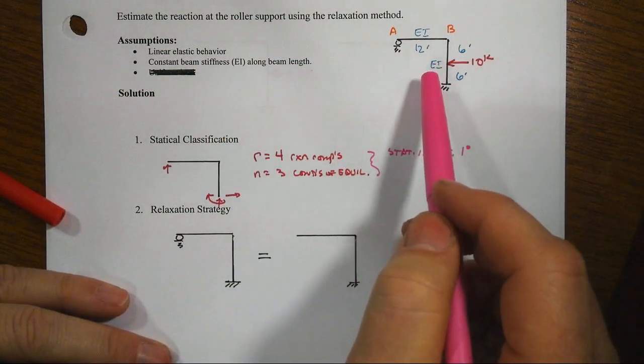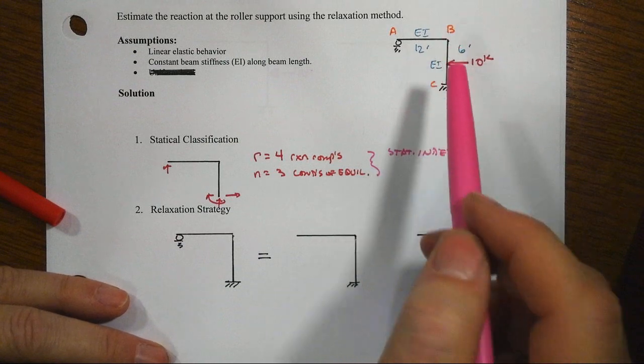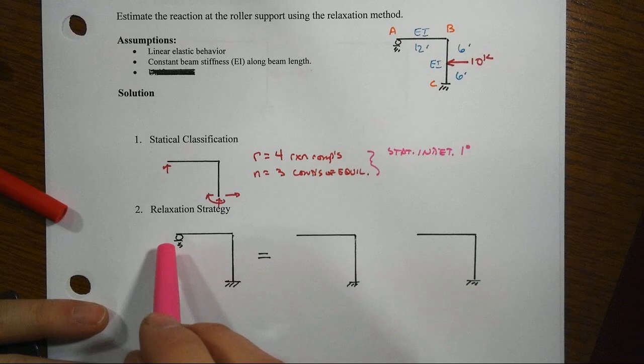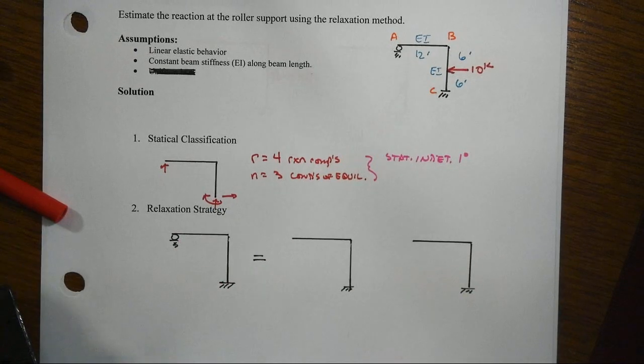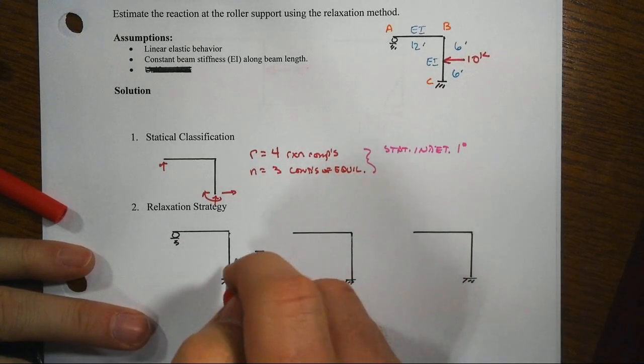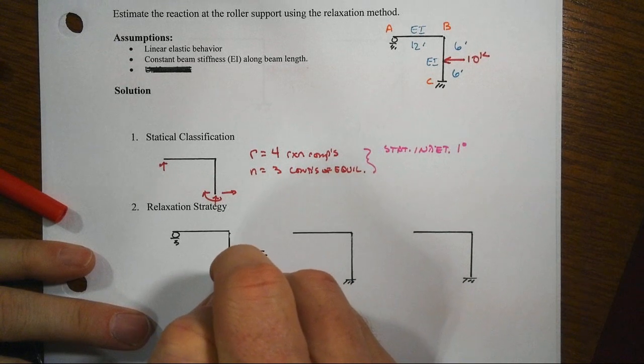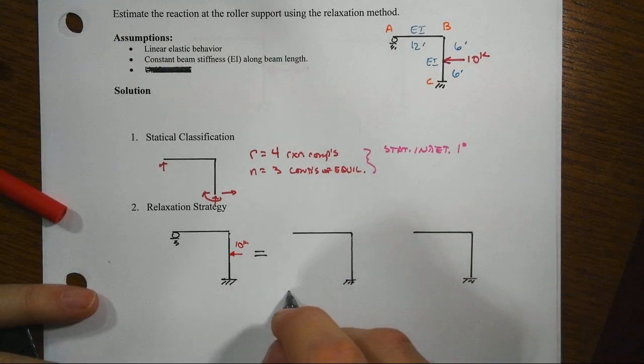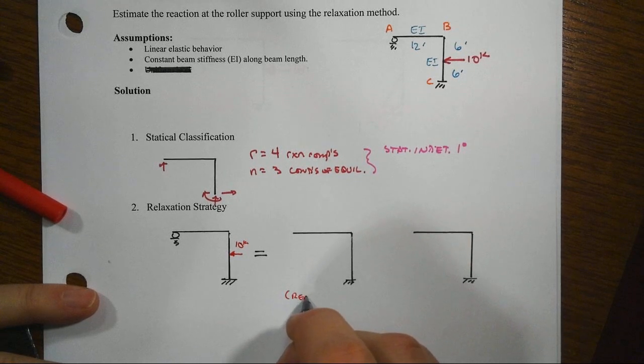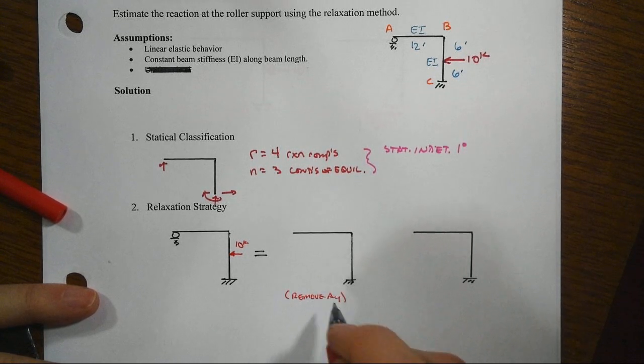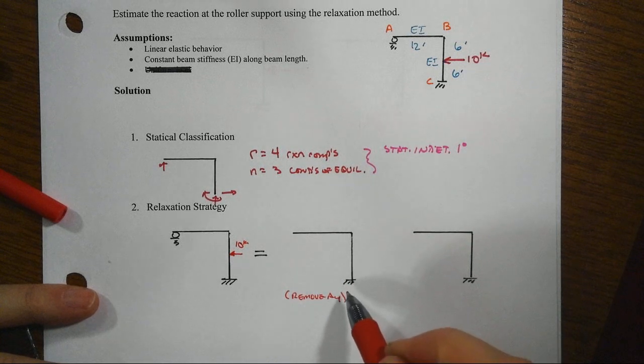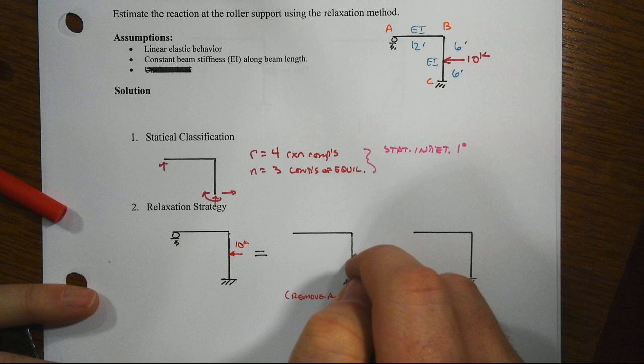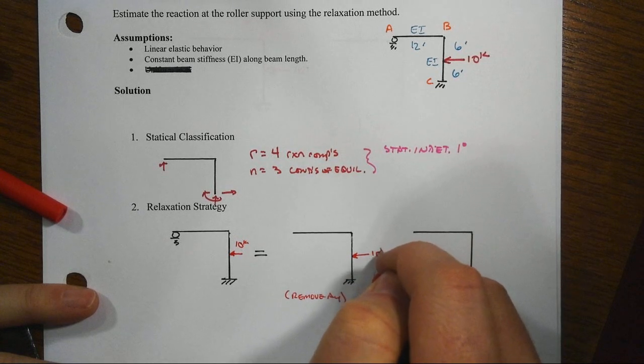It's going to enable us eventually to find all the reactions and then come back and find out what this sway is at B. What we're going to do is take this real system that has this load applied at the mid-height of the column, and in the primary structure, remove Ay—that's our redundant reaction that we've selected—leaving ourselves a cantilever system that you see here, and we're going to put the real load on there.